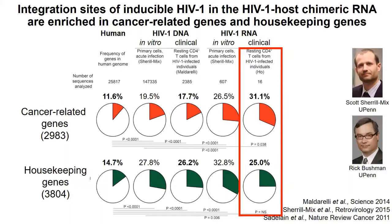Second, we looked at where these proviruses are integrated — are they integrated into cancer-related genes? We collaborated with Rick Bushman, who has a list of approximately 2,983 cancer-related genes. We look at the frequency of these cancer-related genes in the human genome — say 11% — compared with HIV DNA integration sites from Frank Maldarelli's data and our HIV-host chimeric RNA identified from our HIV RNA FISH-seq. We do see an enrichment of cancer-related genes not only in Frank Maldarelli's study but also in our HIV RNA FISH-seq data, indicating that cells expressing HIV RNA and containing inducible proviruses are integrated into cancer-related genes.